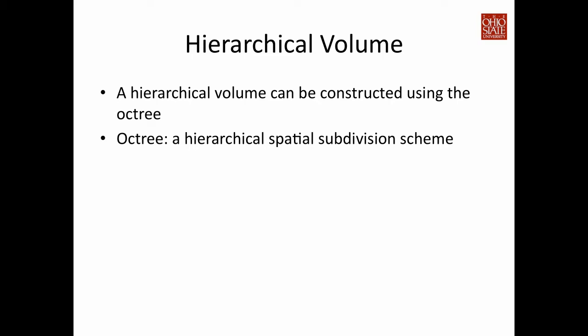So how do we construct such hierarchical volume data? One popular method is to use an OctTree. OctTree is a hierarchical spatial subdivision scheme with a wide range of applications. The general concept of OctTree is a spatial subdivision performed hierarchically — starting from the entire domain, you subdivide the axis of each dimension in half. For three-dimensional space, this gives you eight subdomains or eight octants.